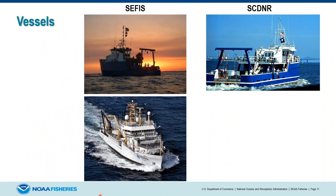The CFIS program uses the RV Savannah — a contract vessel out of Savannah, Georgia — and the NOAA ship Pisces for their research cruises. SCDNR uses the RV Palmetto for their research cruises.